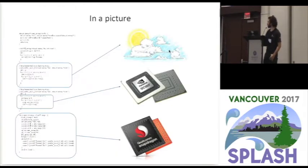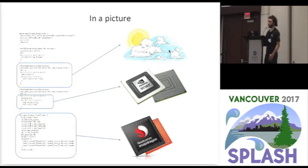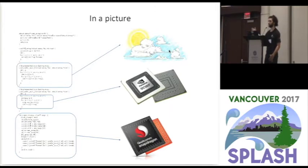Our work in one picture would be this: we receive as input an arbitrary program written without any concern about the architecture that might be running it, and given a description of the different processors we have, we might want to map some parts of the program to run on different processors — for example, offloading some function to a GPU if it's highly parallel, sending some parts to a cloud server, and of course most parts will probably remain on the CPU.